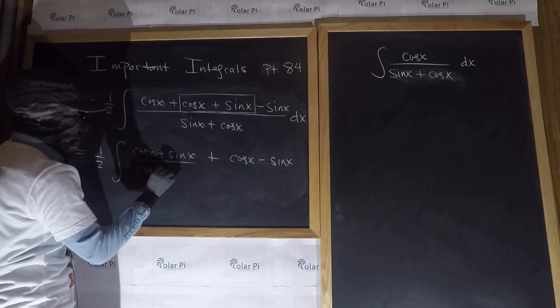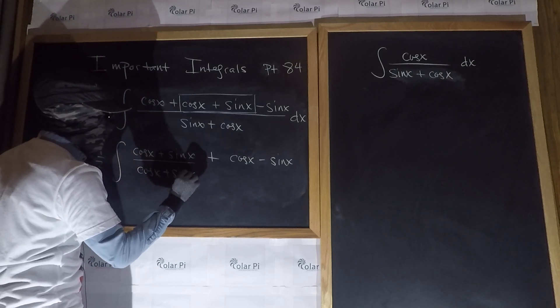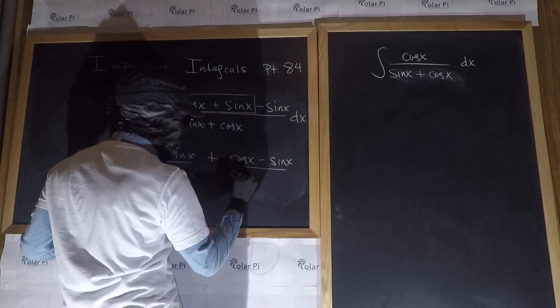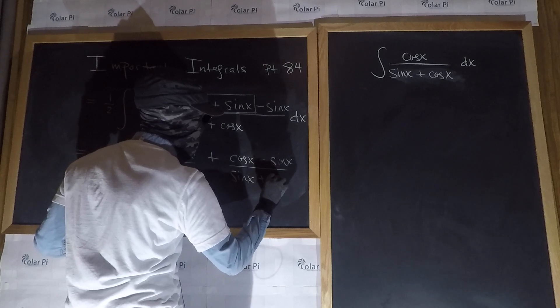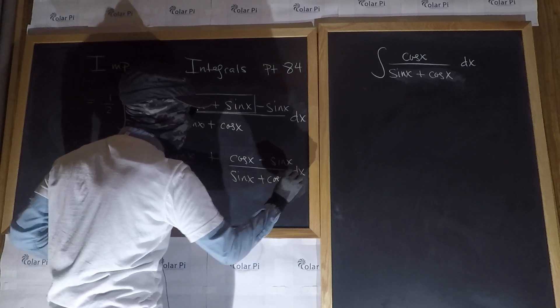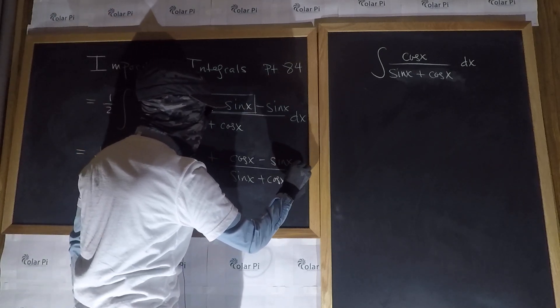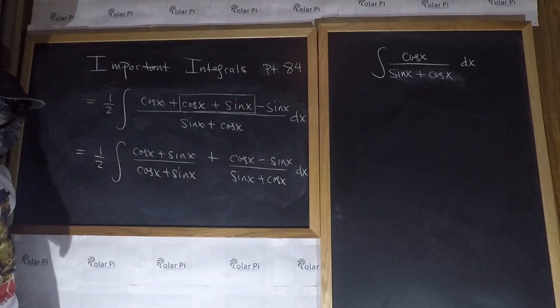So, I could write that as cos x plus sin x in this part, and then I'll write it as sin x plus cos x in this part, and, of course, monsieur dx. Sorry, it's crowded down there. Okay, that's better.